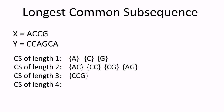First, let's find the common subsequence of length 1, which is easy. x has a, y has a, so a is a common subsequence of x and y, and so is c, and so is g.